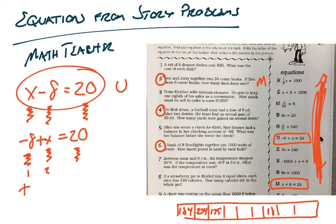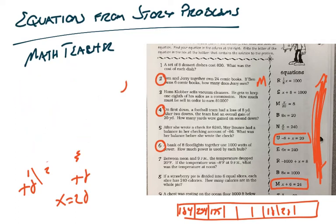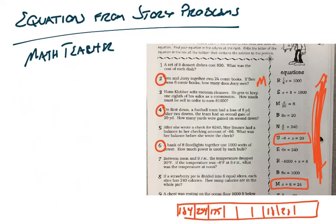Now, of course, we have to solve it, which would be a pretty quick add eight to both sides. X equals 28, and then you'd find a 28 down at the bottom. Let's do another one. Last one, number six.